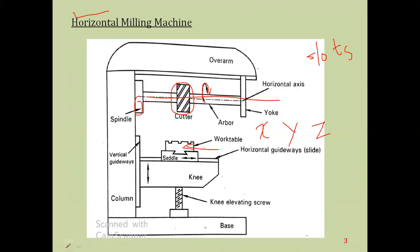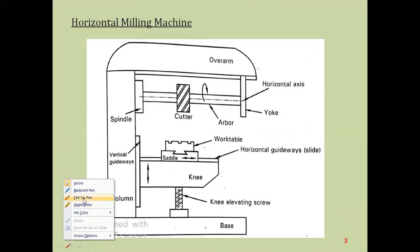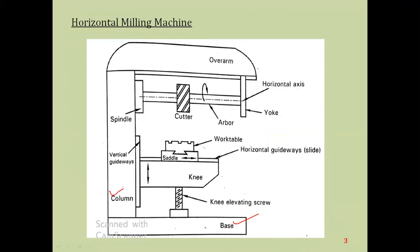A horizontal milling machine consists of the following parts: the base, the column, the spindle, the over arm, the knee, the saddle, and the work table. These are the basic parts of the horizontal milling machine.